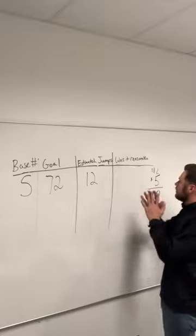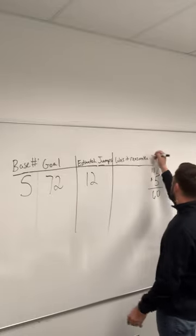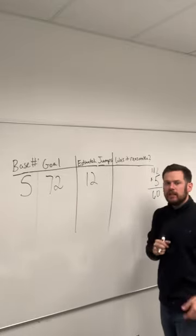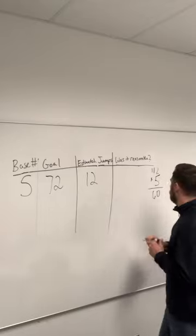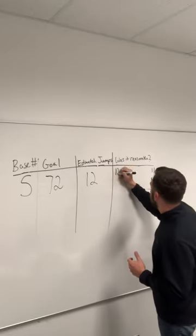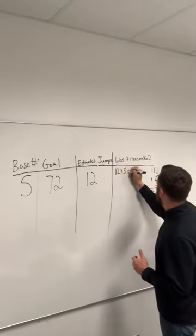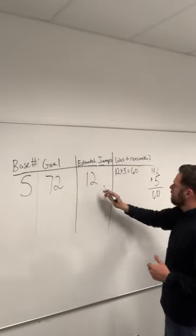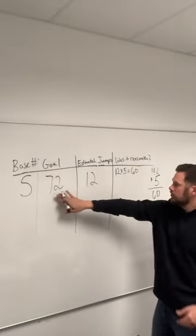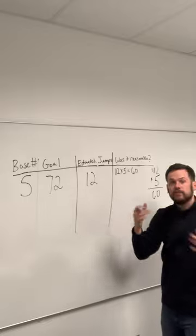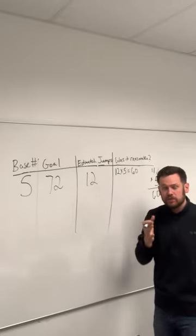So this is what we want to look at. Was it reasonable? We want to know that. So 12 times 5 is 60. It's close. 72 minus 60 is 12. But we need to get a little bit closer to 72.